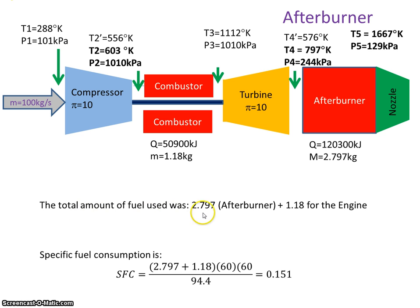Okay, so when we did the analysis of the engine originally, we were burning 1.18 kilograms of fuel. We're now burning 2.797 kilograms of additional fuel. So the specific fuel consumption, it's my total fuel burn. So it's the total fuel multiplied by 3600 to bring it from seconds to hours, and dividing that by the total thrust gives me a value of 0.151 kilograms per hour per newton.